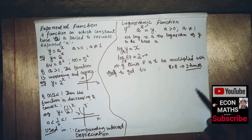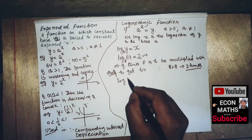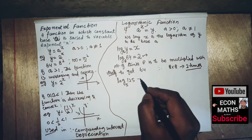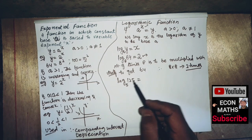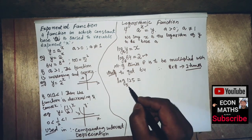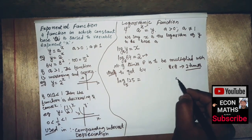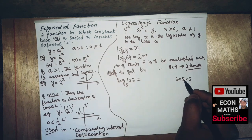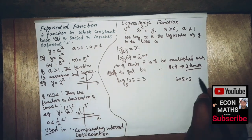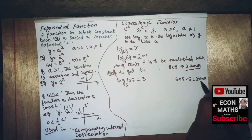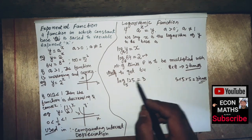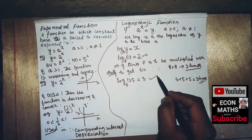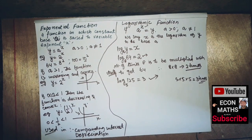Another example: log base 5 of 125 equals 3. This means how many times must 5 be multiplied with itself to get 125. Since 5 times 5 times 5 equals 125, we multiply 5 three times to get 125. So log base 5 of 125 is 3.